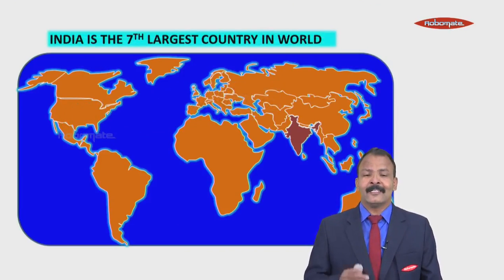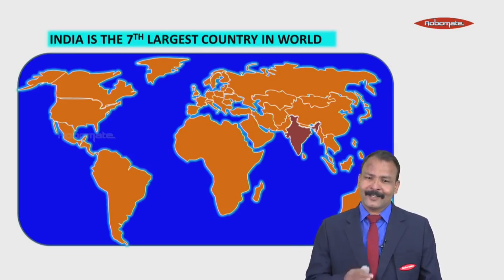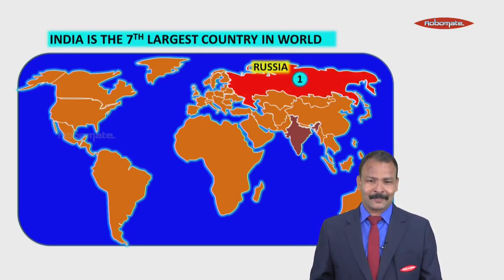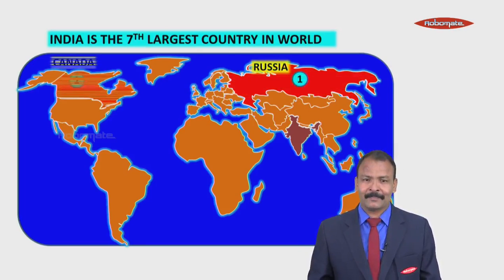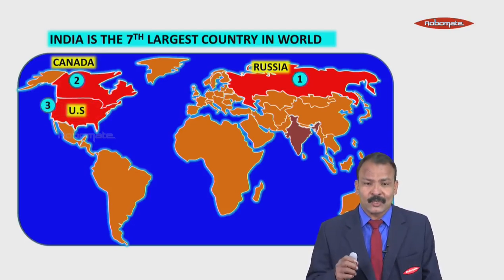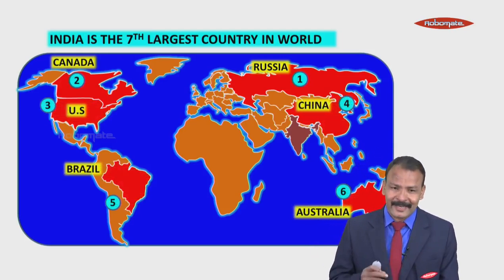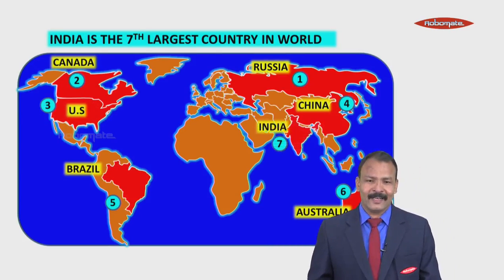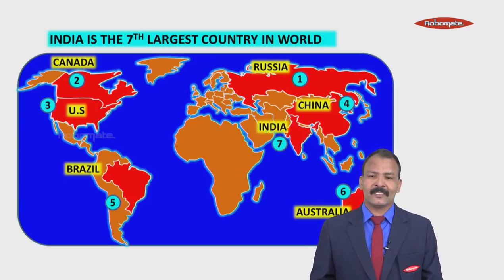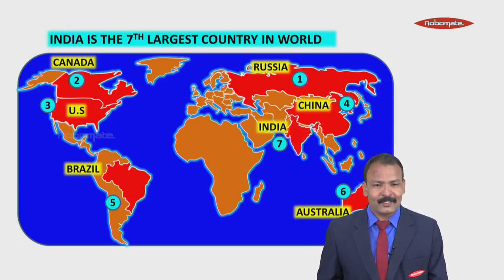India is the seventh largest country in the world. The seven largest countries in order are: Russia, Canada, United States, China, Brazil, Australia, and finally India. That is why we say India is the seventh largest country in the world.